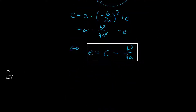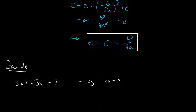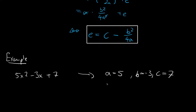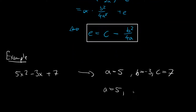Let us look at an example: 5x squared minus 3x plus 7. We identify a equals 5, b equals minus 3, and c equals 7. Then a stays 5, and d equals minus b over 2a, which is minus of minus 3 over 2 times 5.